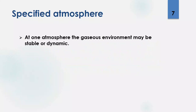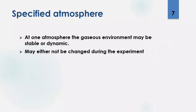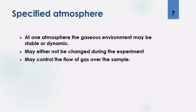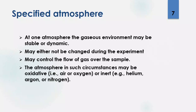What is the atmosphere inside a machine of thermal analysis? That atmosphere is a gaseous one and it may be stable or dynamic. By stable we mean the atmosphere does not change throughout the experiment, while in dynamic mode there is a gaseous flow over the sample. In that specific case, the atmosphere may be oxidative — such as air or oxygen — or inert, such as helium, argon, or nitrogen.